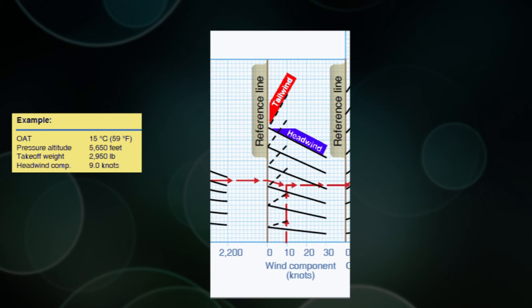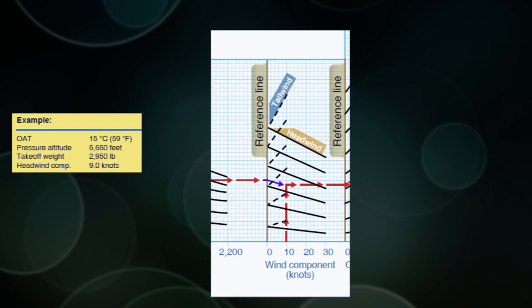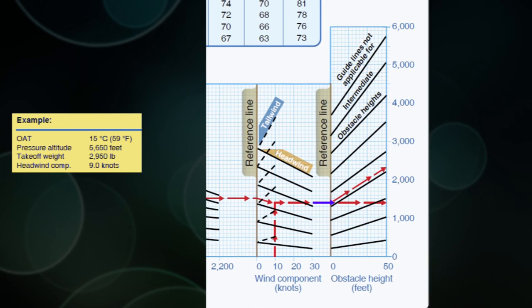And then they said we had 9 knots of headwind. For headwind, if you look, you go down, and for tailwind, you would go up. So for 9 knots of headwind, we parallel that line and go down to 9 knots. And then once those lines meet again, 9 knots and the line that we have, we go straight across to the next reference line.